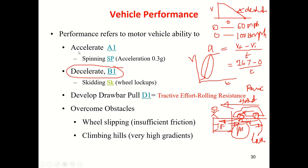You cannot accelerate a vehicle in an unlimited fashion, and you cannot decelerate a vehicle to whatever value you want. The vehicle should be able to develop traction force and overcome rolling resistance from a standstill condition. The vehicle should also be able to overcome insufficient friction conditions — what you call wheel slipping — and should be able to negotiate hills of reasonable gradient. In short, vehicle performance is all about acceleration performance, deceleration performance, drawbar pulling ability, and overcoming obstacles.